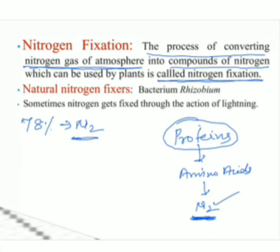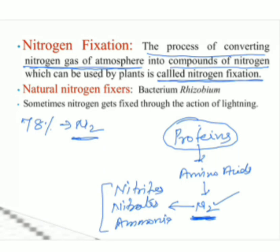Plants cannot take nitrogen directly from the atmosphere. This nitrogen of the atmosphere must be converted into different compounds — nitrites, nitrates, and ammonia. Plants absorb nitrogen in these compound forms. The process of converting nitrogen into these compounds is called nitrogen fixation.